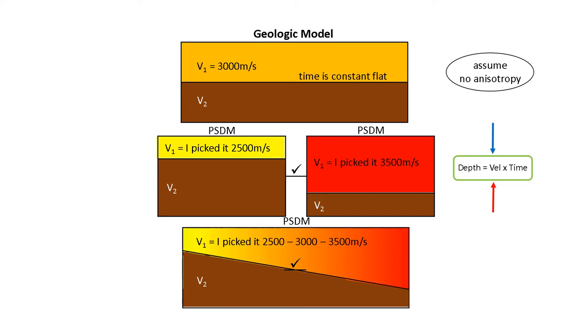So let's look at the results of this model in the middle. Two examples. On the left, I picked the velocity too slow for layer one. I picked it at 2500 meters per second. It's assuming that the base of that would be shallower because I defined it too slow.